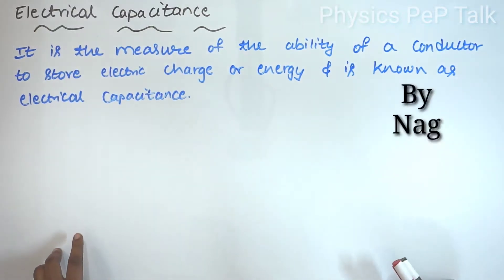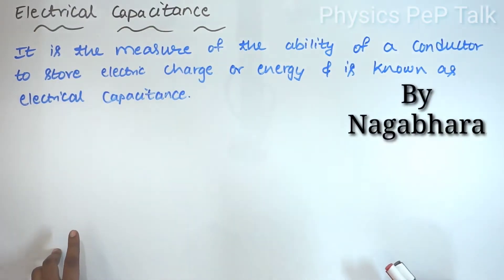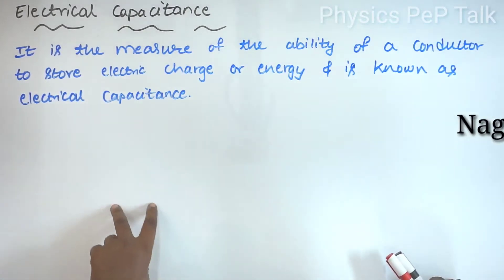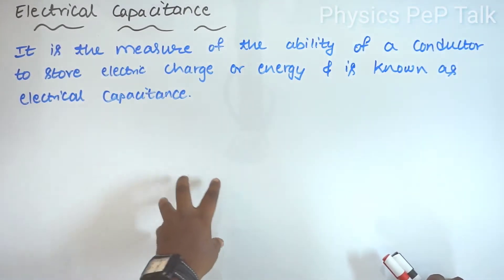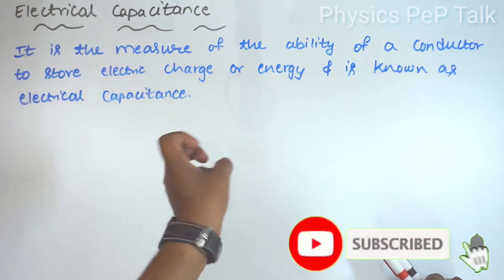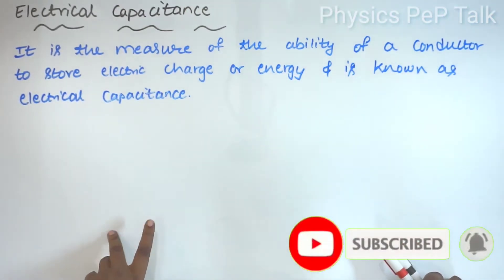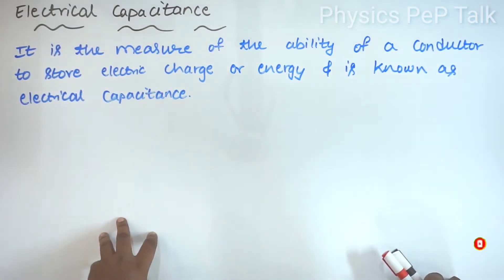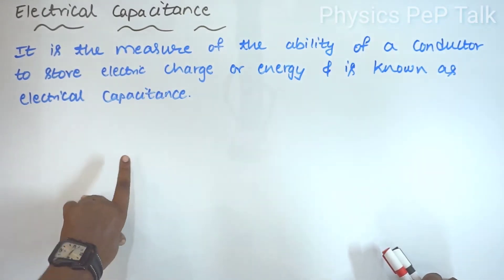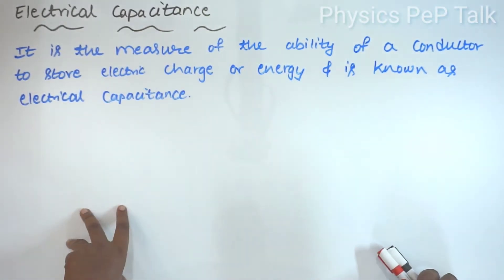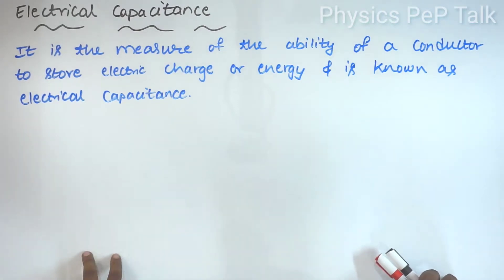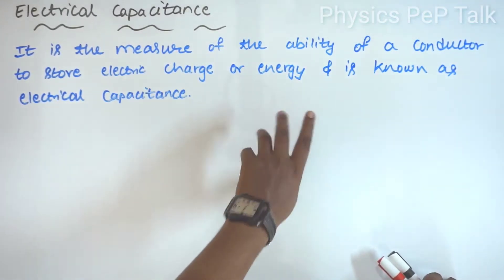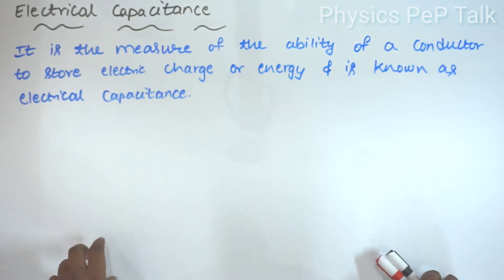Hello students, welcome to Physics Pep Talk. This video is called Electrical Capacitance. What is a capacitor? What are the different types of capacitors? Electrical capacitance is the measure of the ability of a conductor to store electric charge or energy, and is known as electrical capacitance.